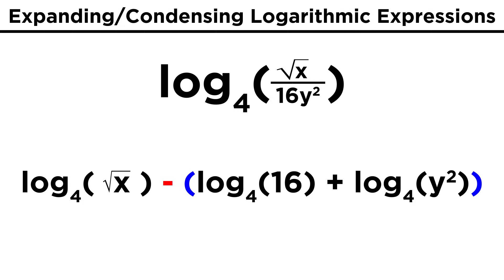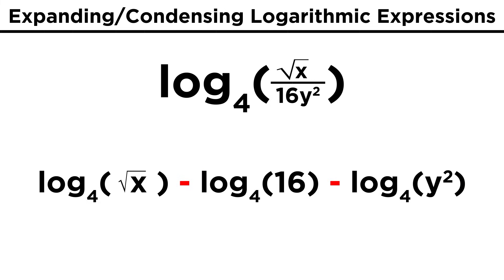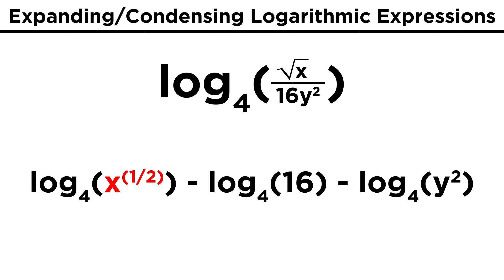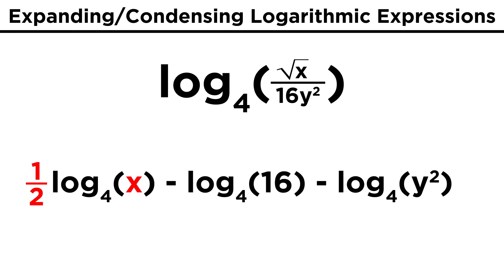Now to get rid of the parentheses, we have to distribute this negative sign, so both of these terms become negative, and we are now done with that step. We can actually simplify further. Starting on the left, let's rewrite root X as X to the one half. We know that we can pull exponents to the front, so this becomes one half log X.